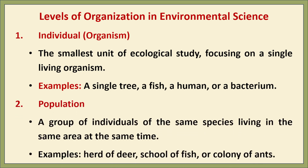The second level is population — a group of individuals of the same species living in the same area at the same time. Examples include a herd of deer, a school of fish, or a colony of ants. Populations interact with their surroundings and play a vital role in maintaining ecosystem balance.